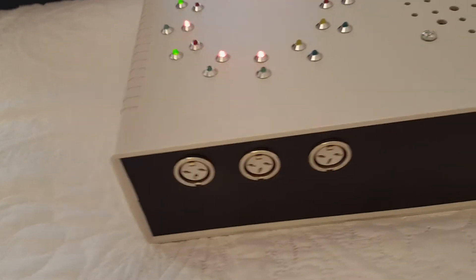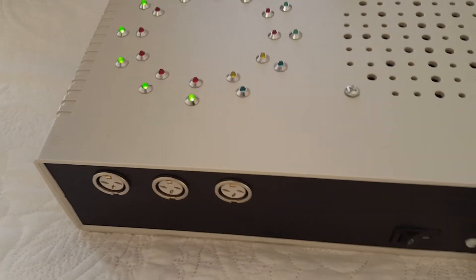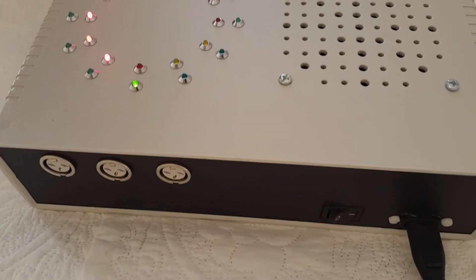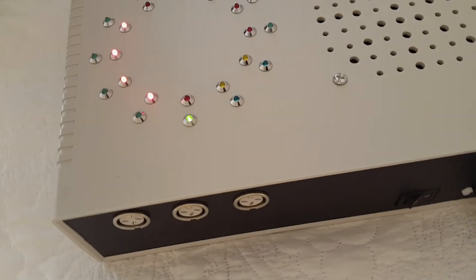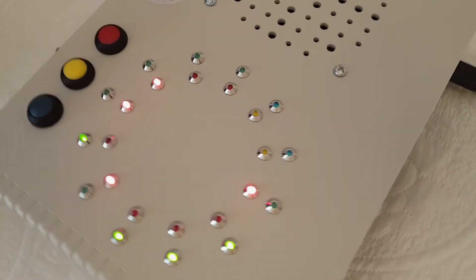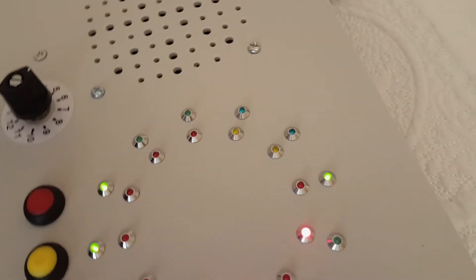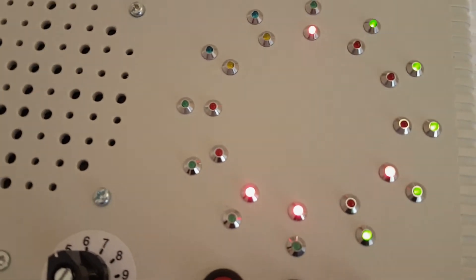Round the back we have the input sockets for the bell sensors which I haven't discussed yet, and the mains input as well with a mains on off switch. The loudspeaker of course is the star shaped grill on the left of the bell lights.